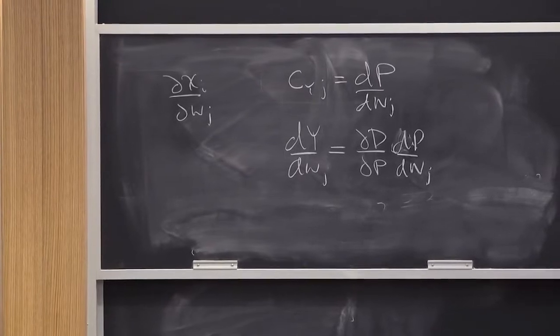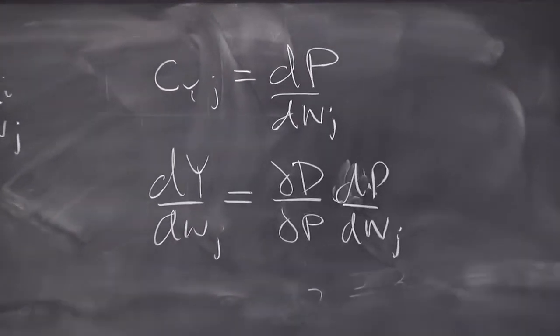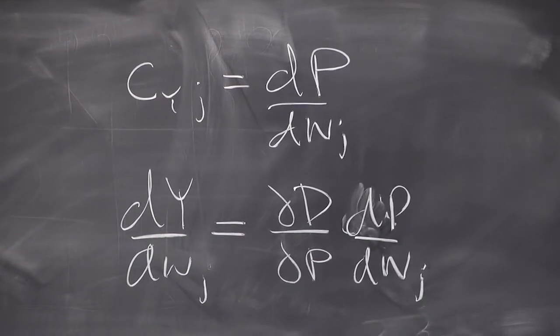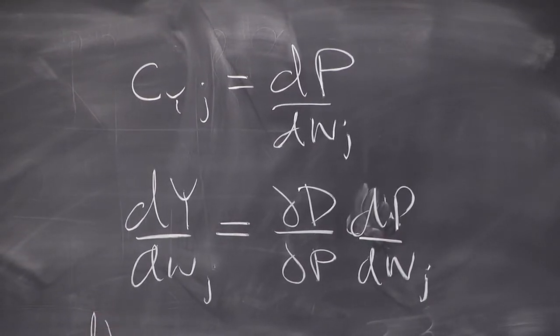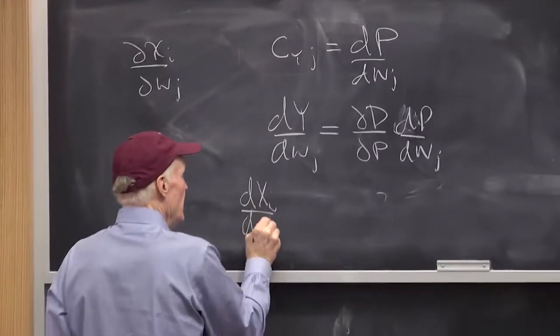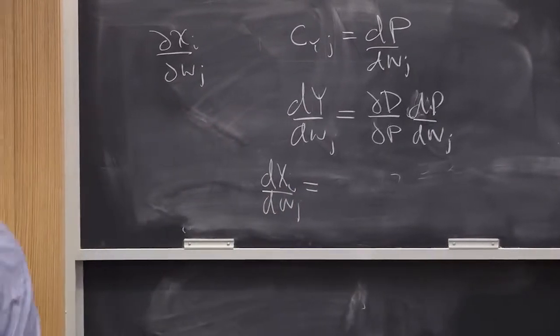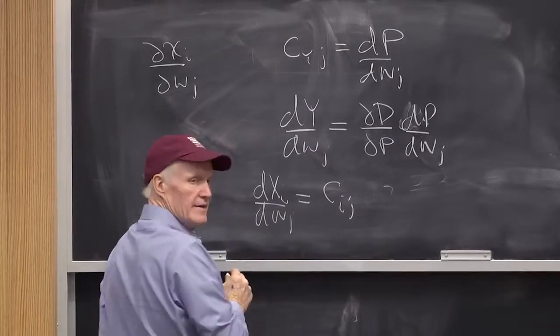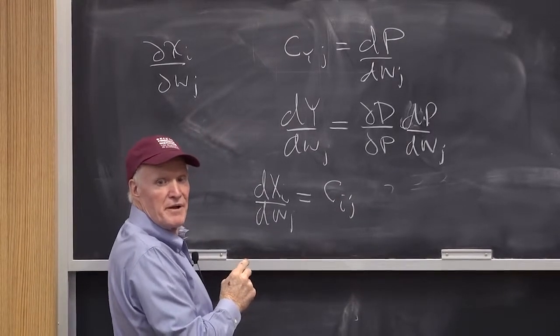So dy, dwj, has to be equal to partial d, partial p, times dp, dwj. Now you see where the cij is going to come in, right?